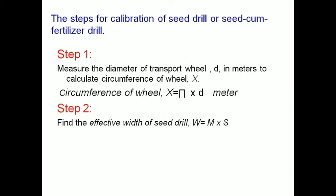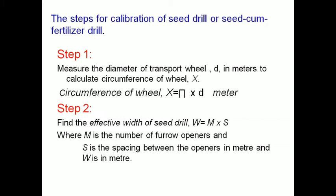Step 2: Find the effective width of the seed drill, or working width of the seed drill, or total width of the seed drill. W is equal to M multiplied by S, where M is the number of furrow openers and S is the spacing between two successive furrow openers in meters. So the width of the seed drill will be in meters.